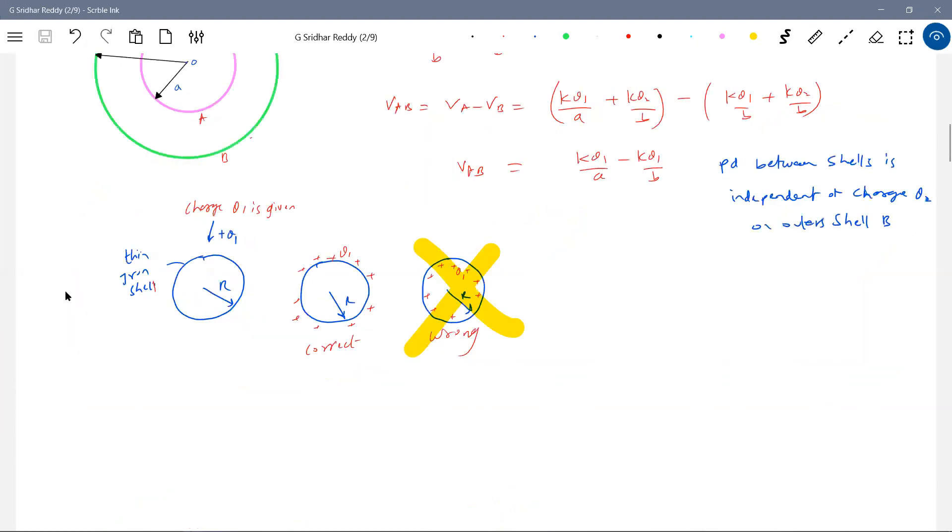Okay. Now, again, let me go back to the same idea. There are two shells are there. They are given charges Q1, Q2, the same thing. Why the charge minus Q1 plus Q1 actually will happen. This is shell A. The shell B, I'll make it little bit thick.